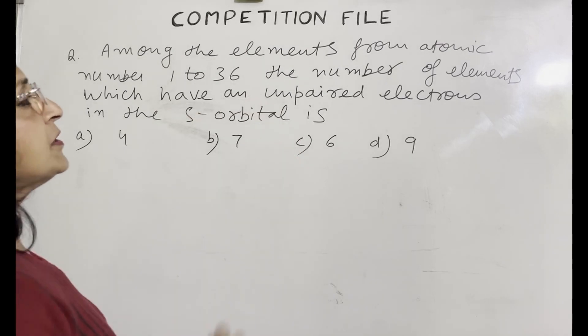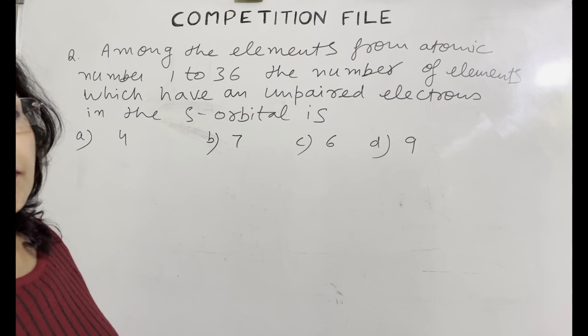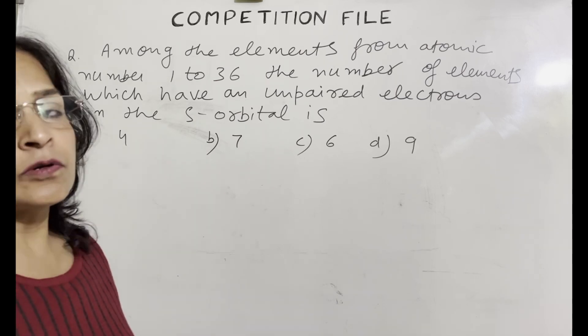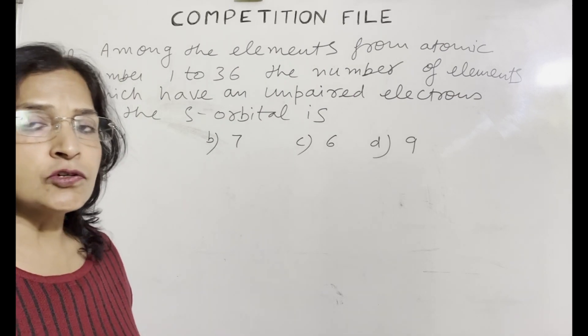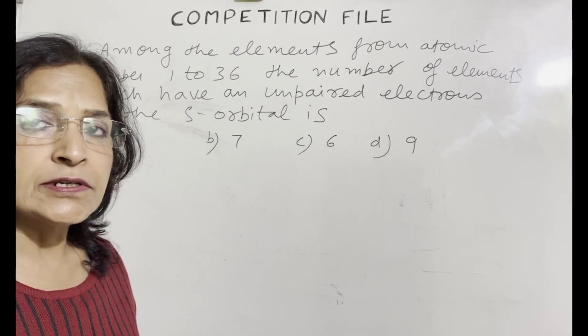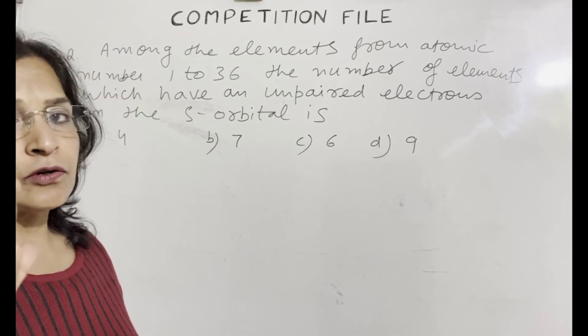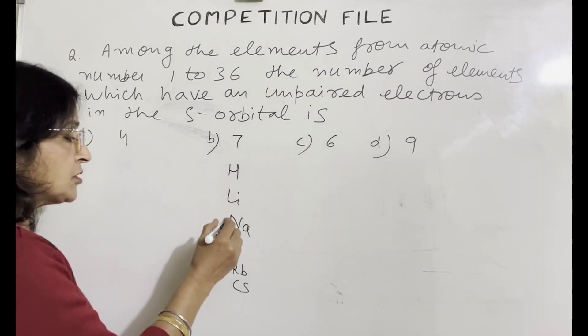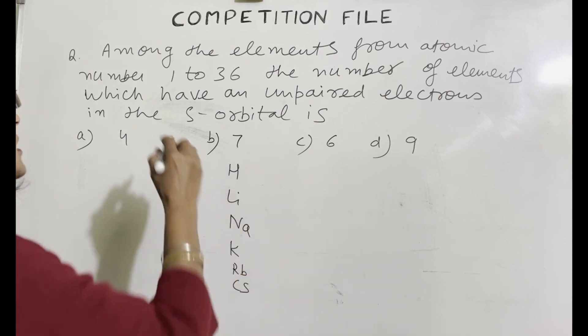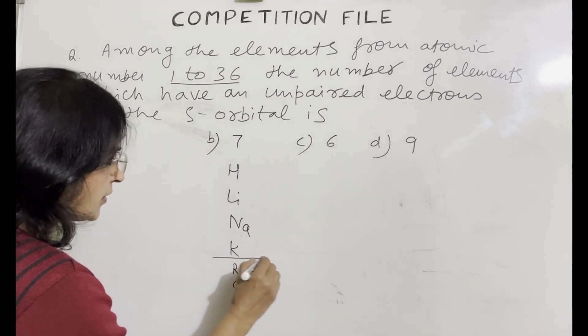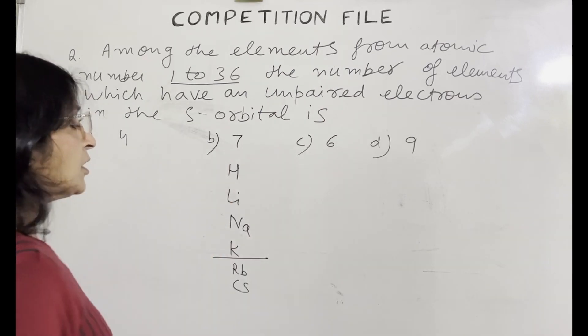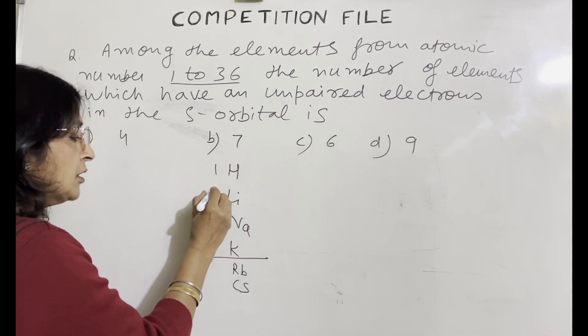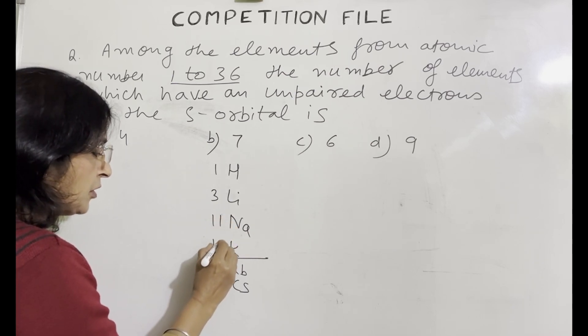Next question is among the elements from atomic number 1 to 36. The number of elements which have an unpaired electron in the s orbital is. So unpaired electron in s orbital. Group 1 elements have one unpaired electron in s orbitals. So we will write the elements of group 1. These are the elements of group 1. Hydrogen, lithium, sodium, potassium, rubidium and cesium. From 1 to 36 is given. So only these 4 elements we have to take. Atomic number of hydrogen is 1, lithium 3, sodium 11 and potassium 19.